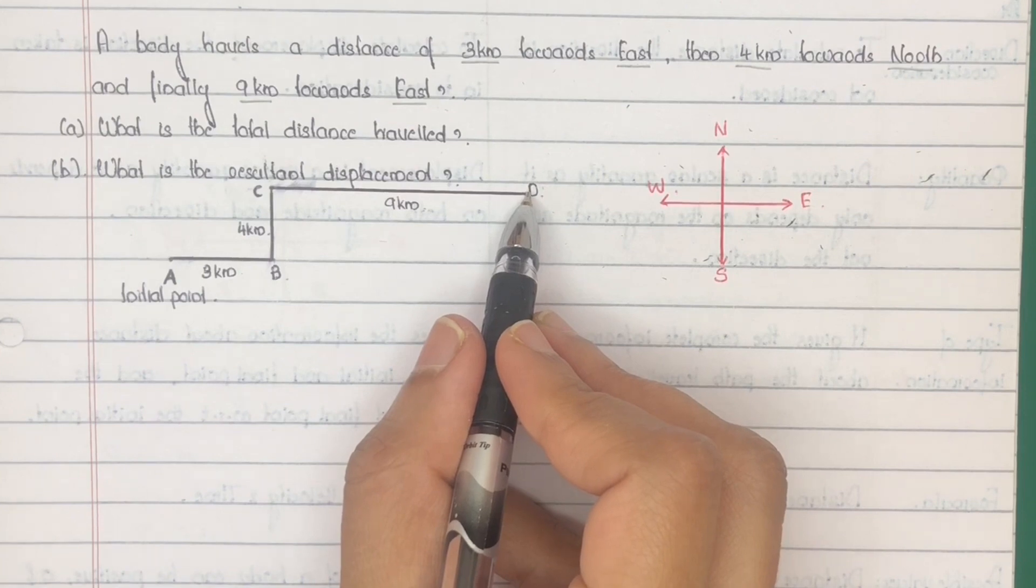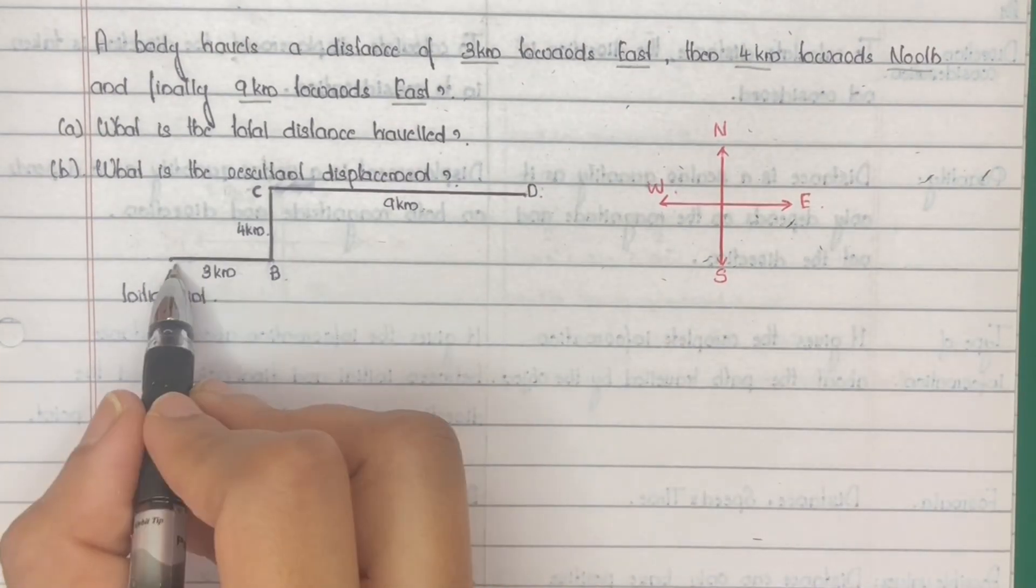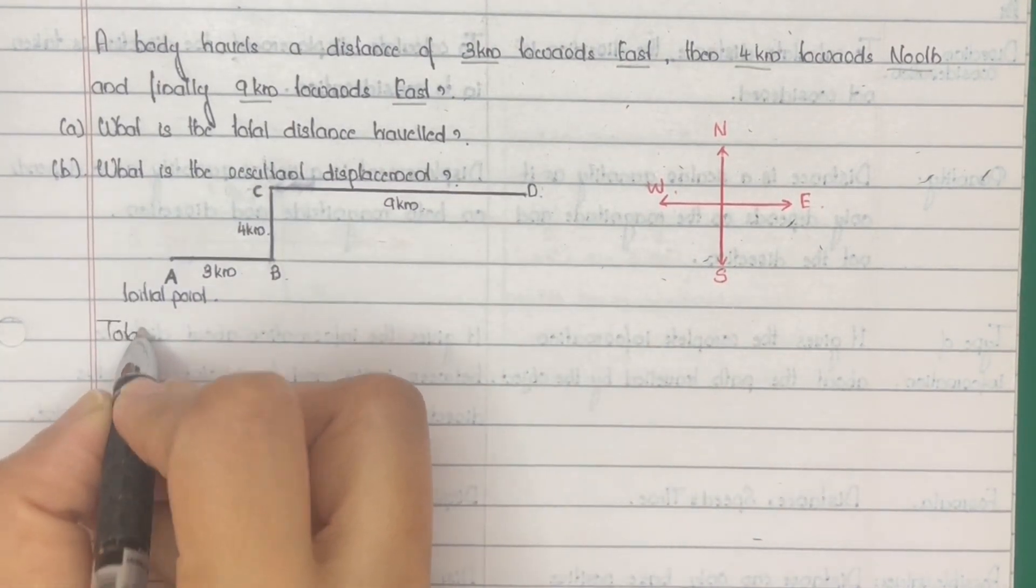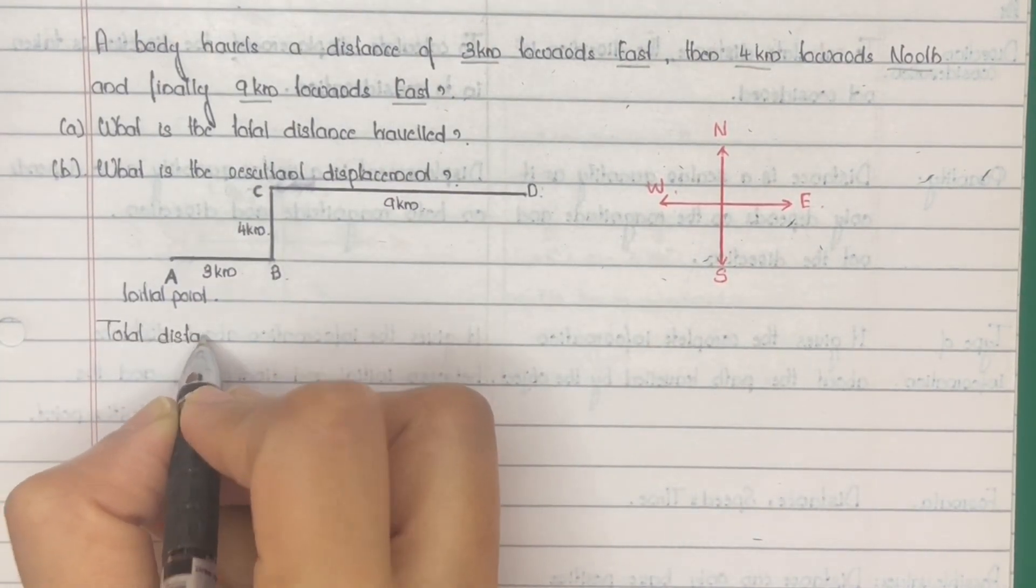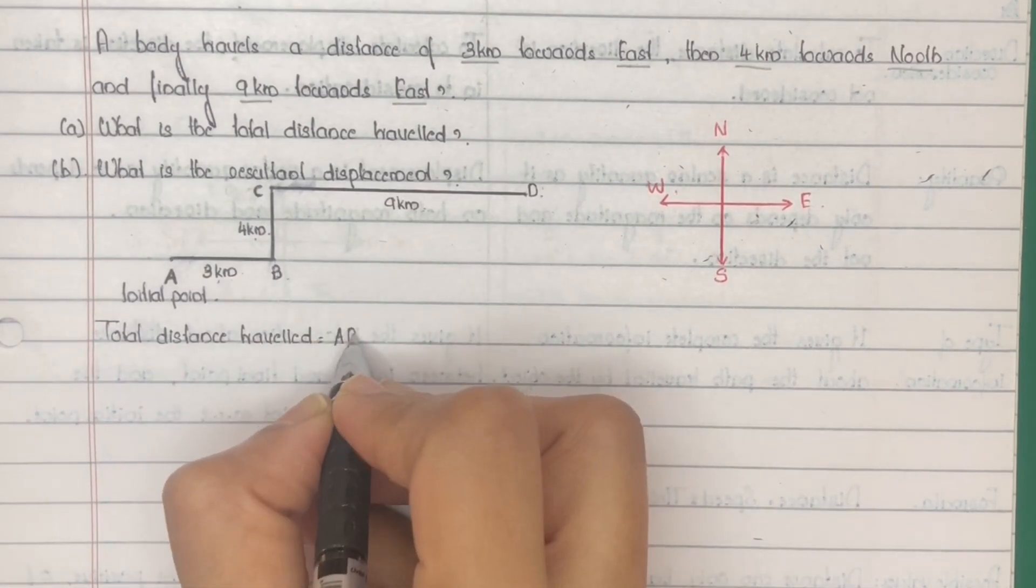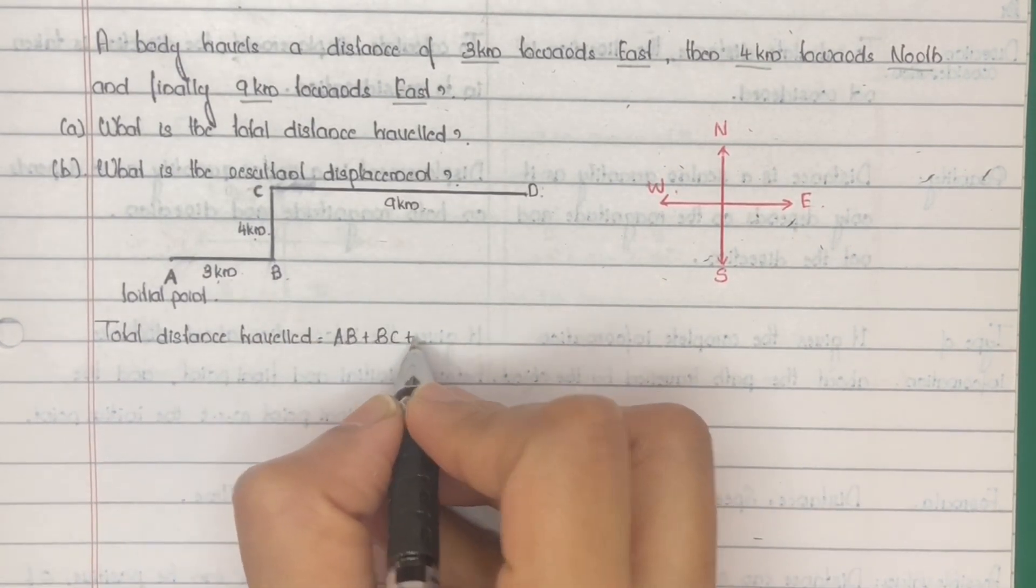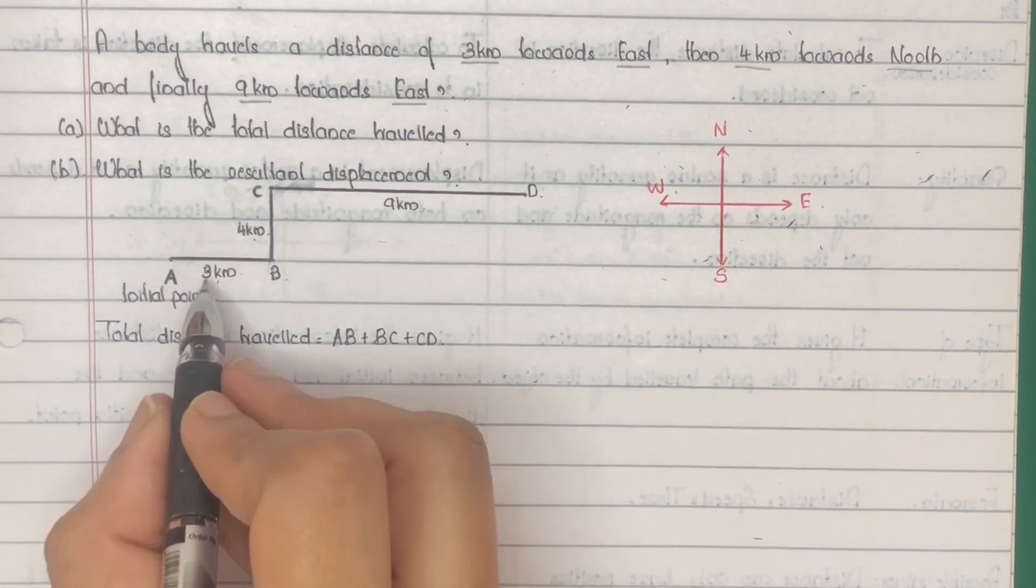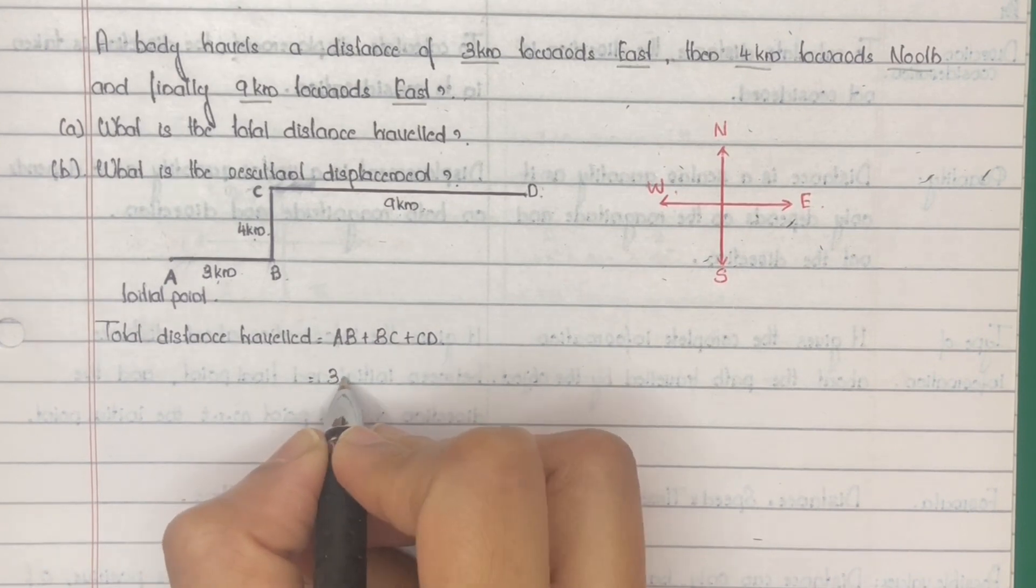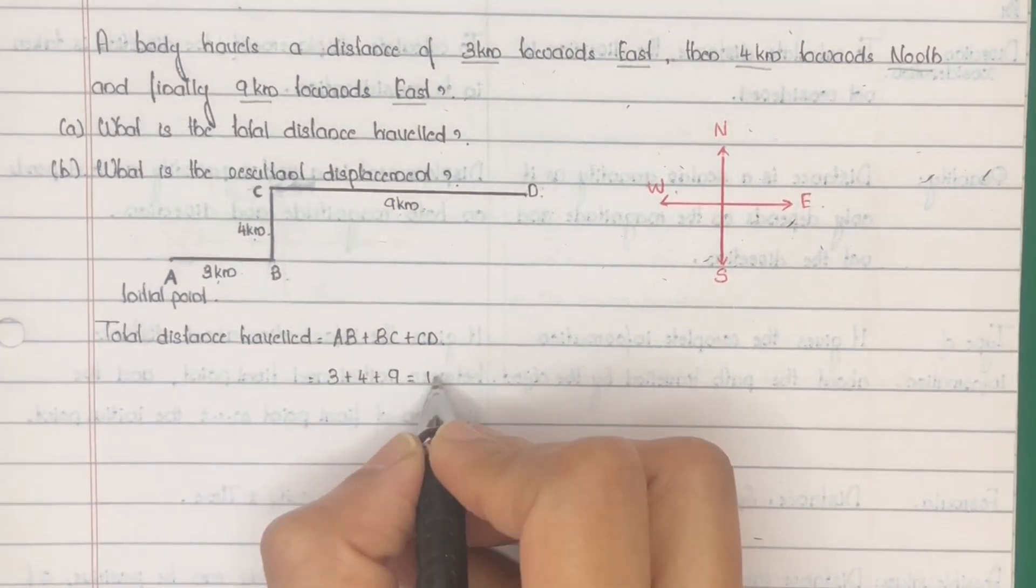This is the path covered by the body. So the distance traveled will be length of AB plus BC plus CD. That is 3 km plus 4 km plus 9 km. That is 16 km.